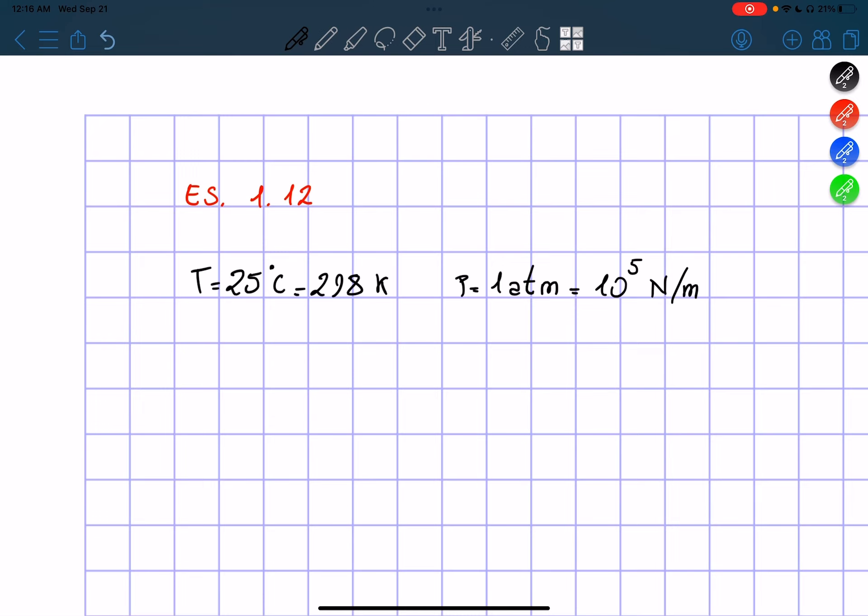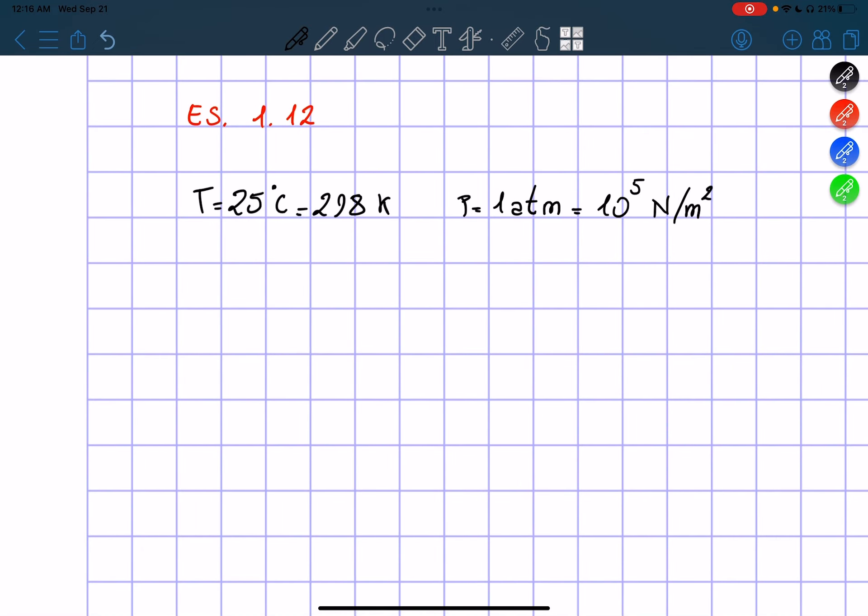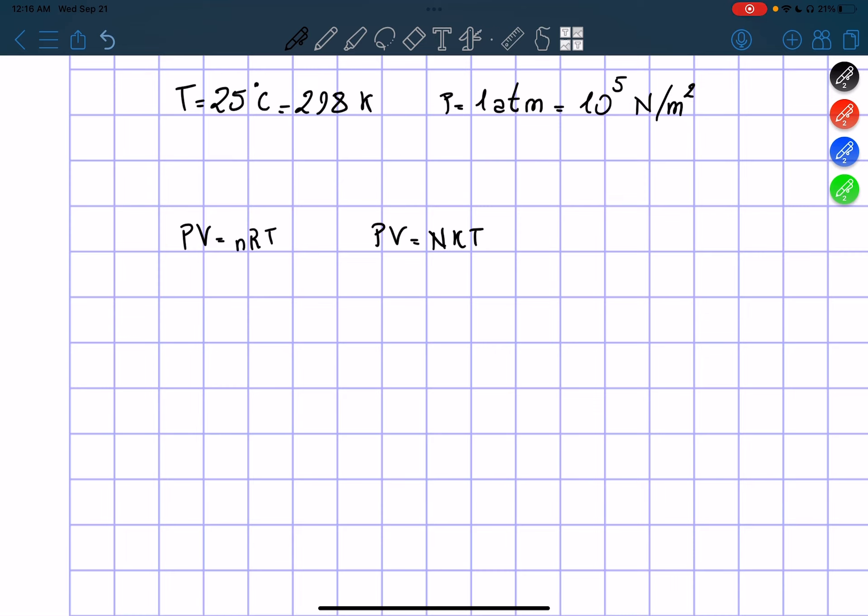So in order to do this we just have to use our ideal gas formula, which is PV equals NRT or PV equals NkT. I'm just going to use the second one. So the volume per molecule, if I do this, that's why I'm using the second formula, volume per molecule you can find directly is equal to kT over P.